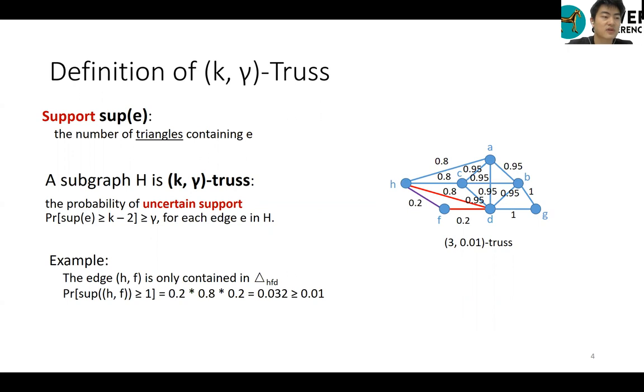For example, consider this uncertain graph. For an edge HF, only one triangle HFD contains this edge HF. Thus, the probability that the uncertain support equals to 1 is 0.032. In addition, the whole graph G is the 3-0.01-truths, because for every edge, the probability of uncertain support is no less than 0.01.